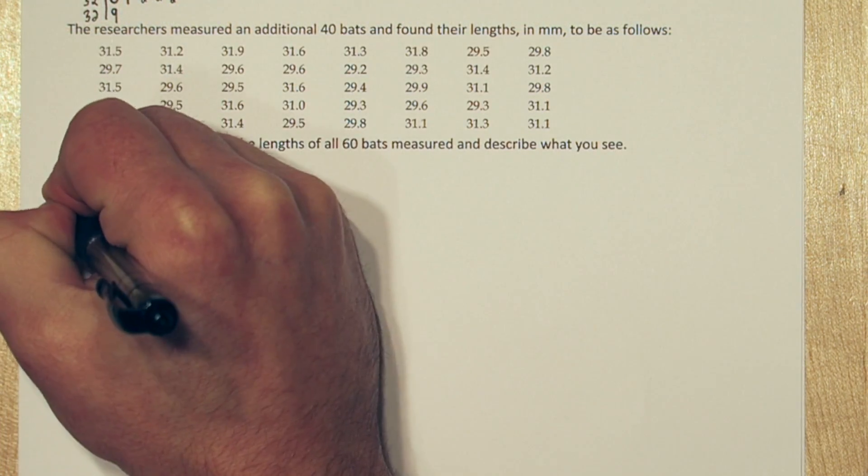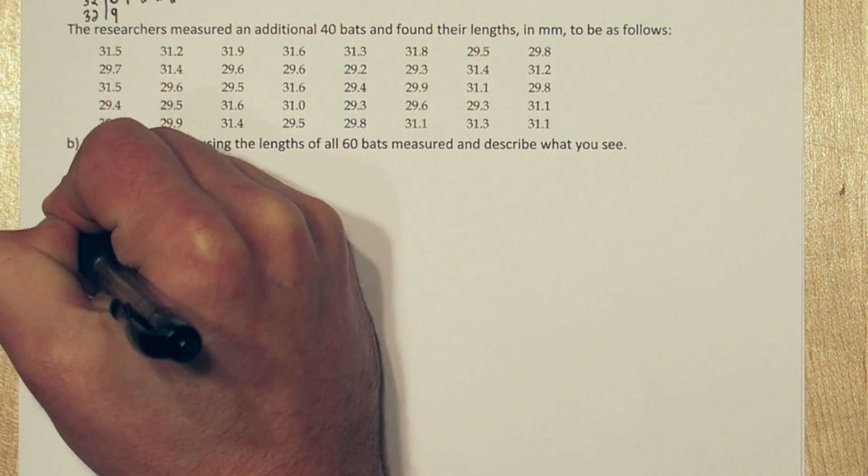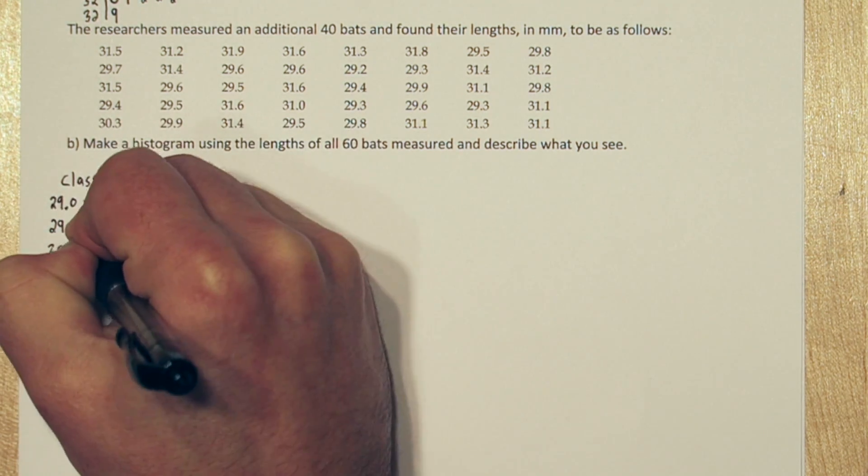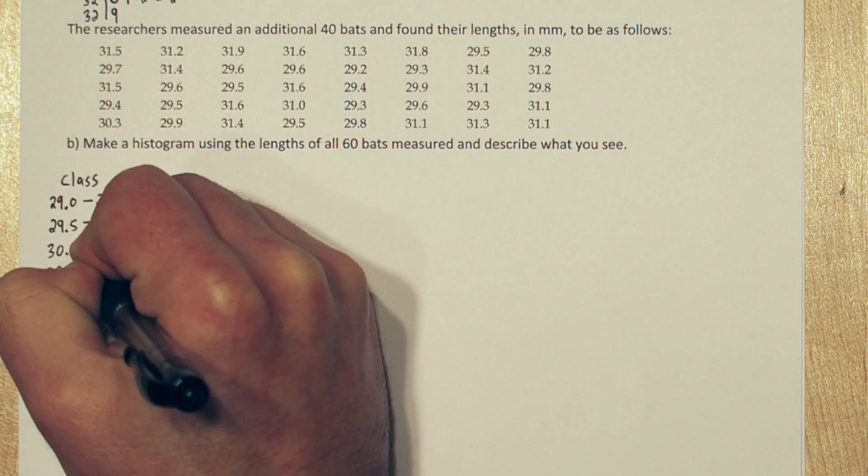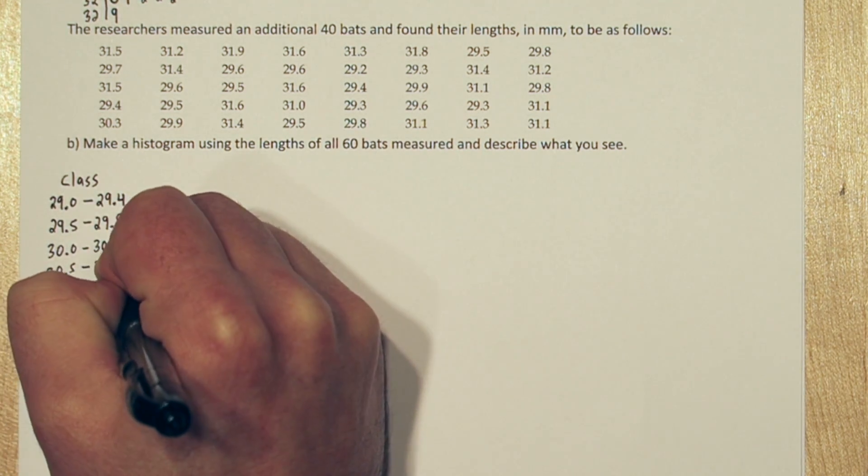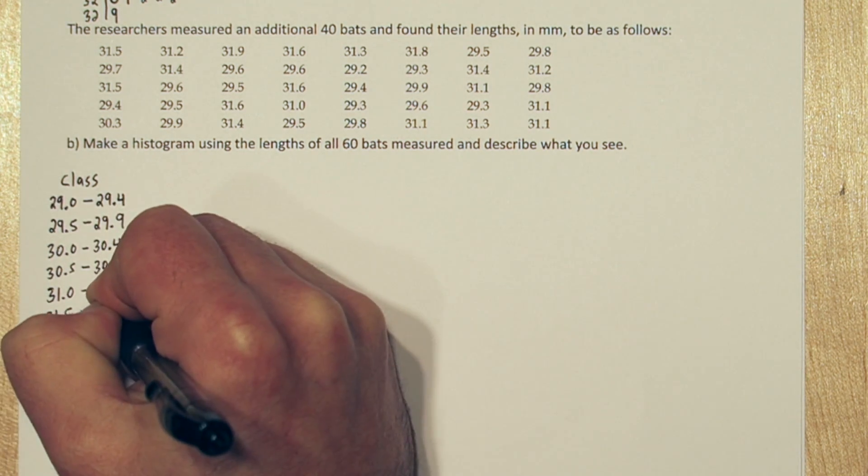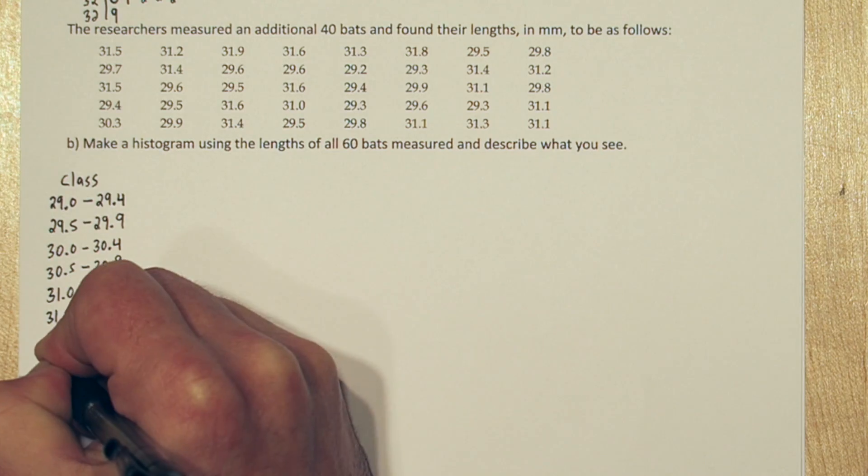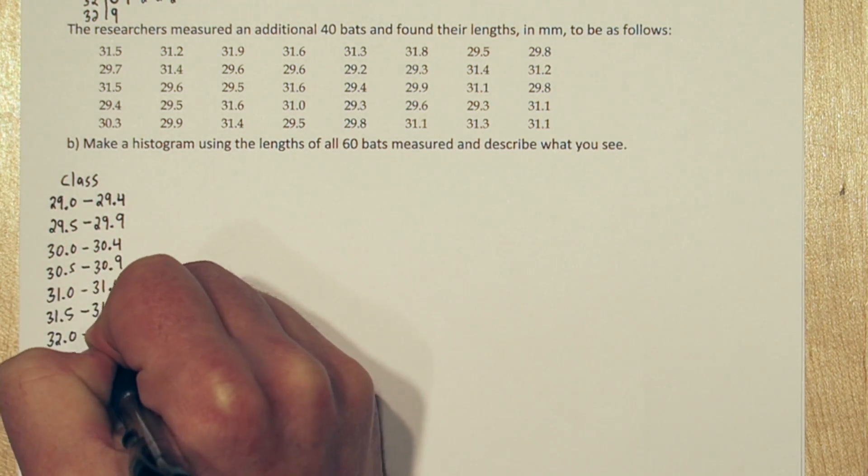So we're going to make a histogram by hand first, and then I'll show you how to do it on the calculator. The first step to making one by hand is to establish your classes. So from our stem plot, we had eight classes, and that's a good number to have. You want to have between, I'd say 6 and 12 classes for a histogram. So 8's a great number. So let's write down all our class intervals.